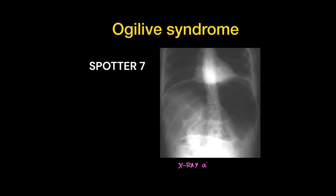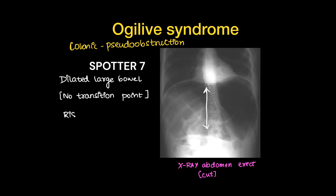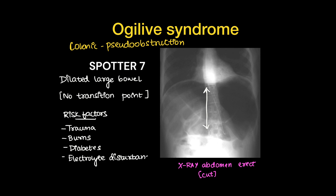This is an emergency and fatal condition: Ogilvie syndrome. This is an x-ray abdomen erect and is nothing but colonic pseudo-obstruction. Here you can see the transverse colon and large bowel are dilated, with no transition point seen even on CT, barium studies, or clinically. Risk factors include trauma, burns, diabetes, and electrolyte disturbances. It can lead to perforation, so it is an emergency condition.